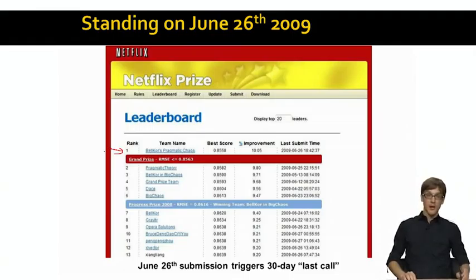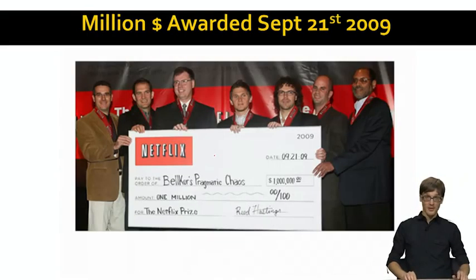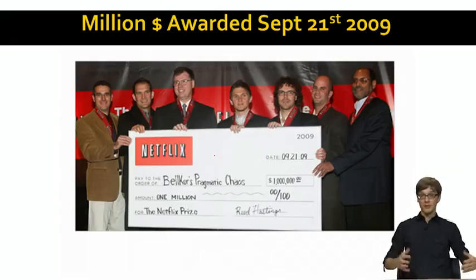And a few months later, they actually received the check and took this very nice photo. So basically we saw that using very nice mathematically clean algorithms, we can get very close to the grand prize, but to make the last few percent, this kitchen sink approach had to be used to make the predictions.